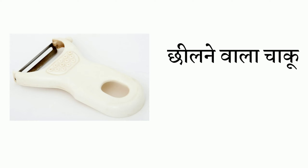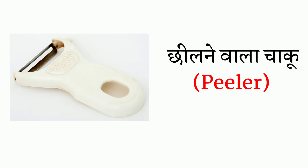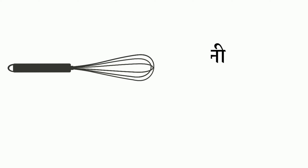Next we have chhile — we'll speak in English, peeler. Next we have phetani — it's called whisk.